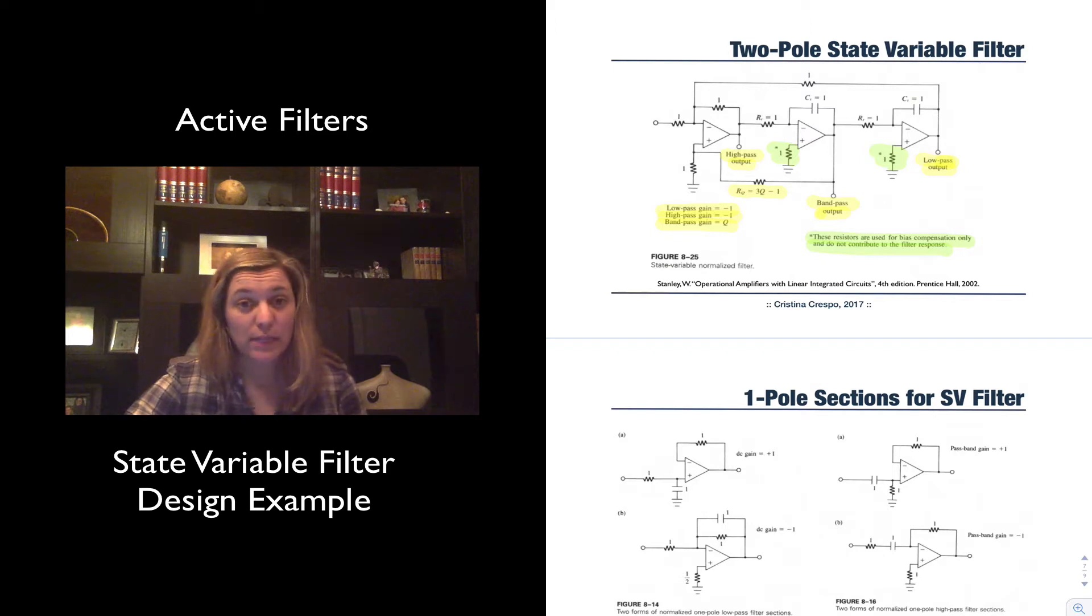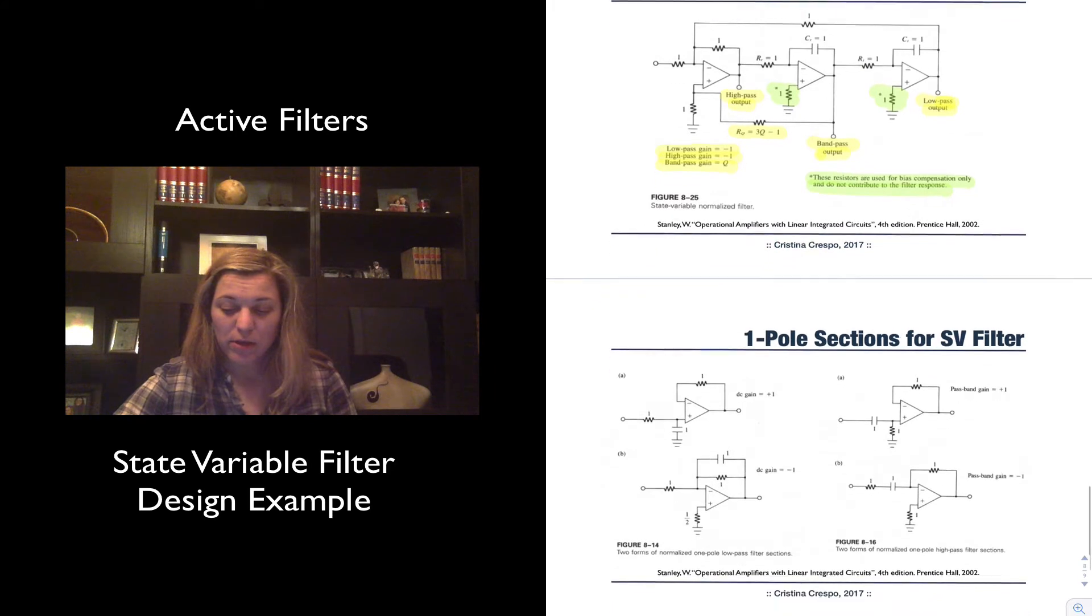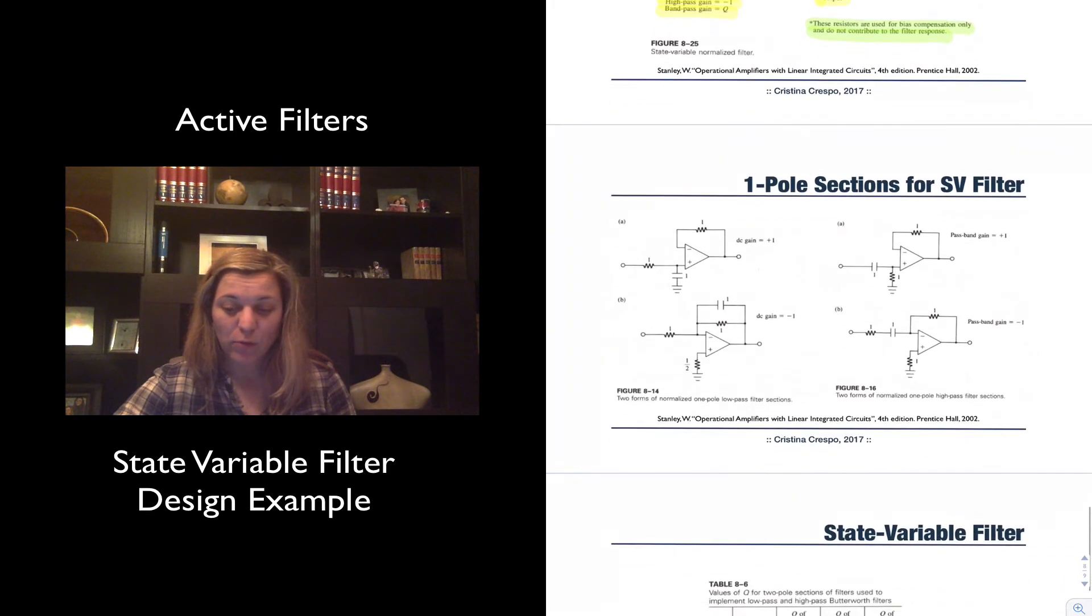That's for the two-pole State Variable Filter. We can generate State Variable Filters that have more poles than two, and less poles than two as well. Here we have the one-pole sections for the State Variable Filter. The first column, A and B, are the low-pass filter sections. The second column, A and B, are the high-pass filter sections.